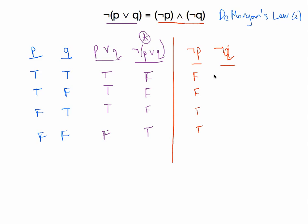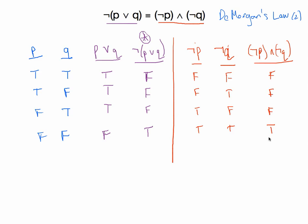And the same thing for Q — just flip the truth values: false, true, false, true. Now I'll make a final column for not P and not Q — the conjunction. To do that, I look at those two columns and join them with an and. This is false unless both columns read true. So false and false gives false, false and true gives false, false, and then true. You notice this column reads false, false, false, true — and the other statement's column also reads false, false, false, true. So those two statements are logically equivalent, because their truth tables give the same results under all the same circumstances.